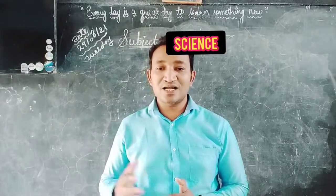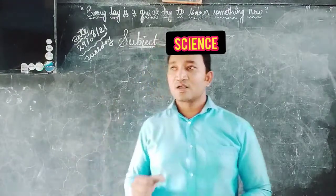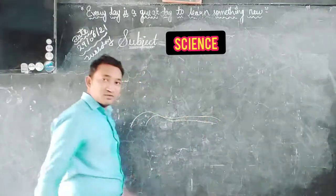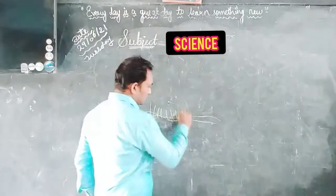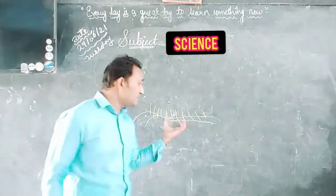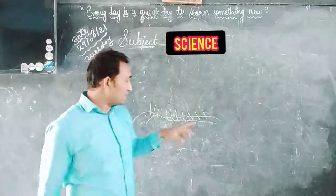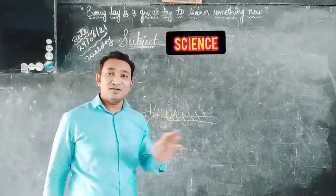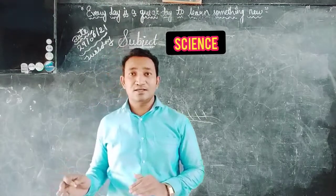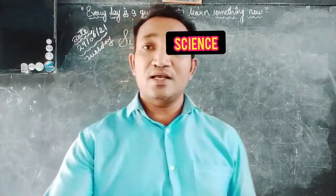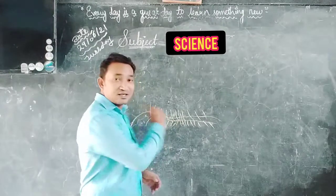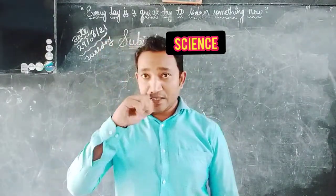Fibrous roots of grasses prevent soil erosion. What is soil erosion, students? Look here — this is soil, and these are grass. If water comes, it will flow out. But if the grass is here, the roots will hold the soil in place and not let it go. This is how grass prevents soil erosion.